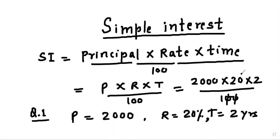So 20 will cancel out and we will get 800. So simple interest is 800.